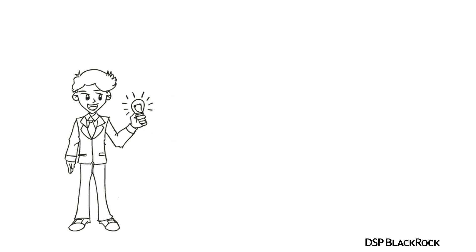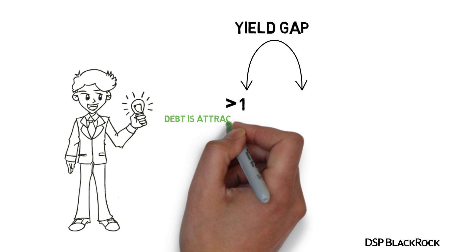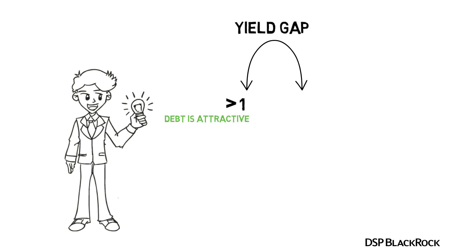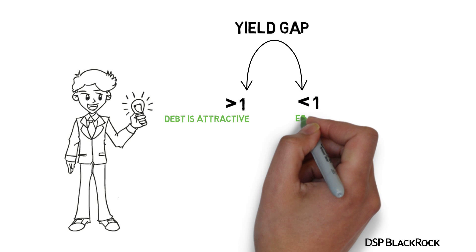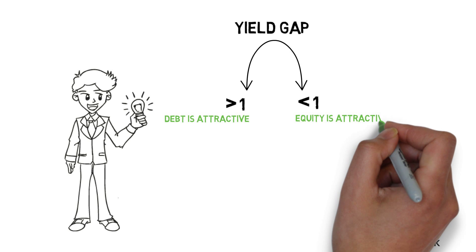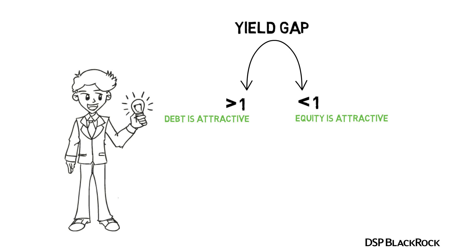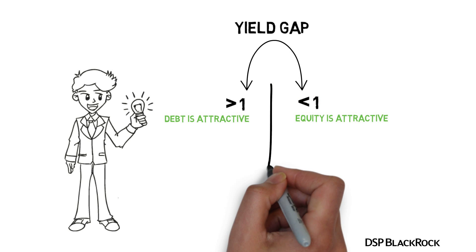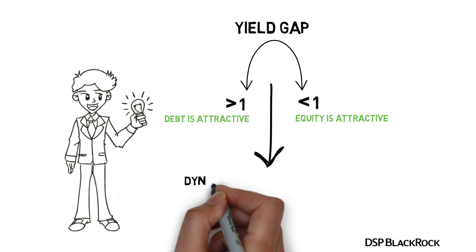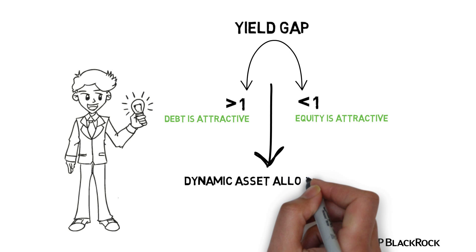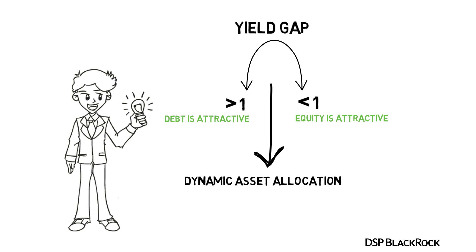The yield gap helps in making simple rules to allocate between equity and debt, based on how attractive one is compared to the other. A yield gap greater than 1 means debt is more attractive — invest more in debt, less in equity. A yield gap less than 1 means equity is more attractive — invest more in equity. This rule-based approach is called dynamic asset allocation, and it takes away the human element in revising a portfolio.